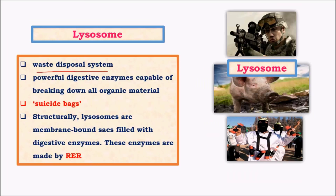Lysosome is the waste disposal system of the cell. It comes into action when a cell is dead or when there is a bacterium or foreign material that needs to be expelled. Lysosome plays three different roles: one is the role of a soldier — it kills enemies like bacteria and foreign particles; the other is the role of a suicide bomber — hence it is called a suicide bag because when cell division doesn't occur properly, the defective cell is harmful to the body, and lysosome receives enzymes to burst that cell; and the third function is the role of a pig — it simply cleans up mess by consuming all waste material like dead cells and dead bacteria present within the cell.